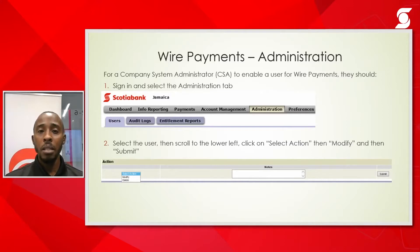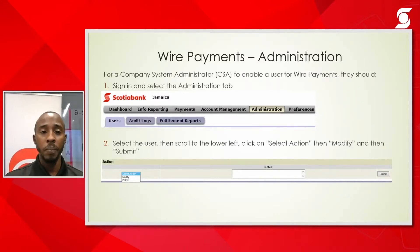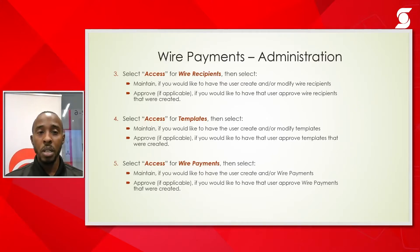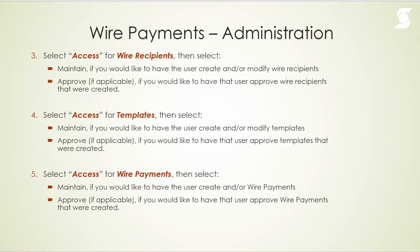When you sign in, go to Administration and click on the user you want to modify or view. Once you're on the user profile, go to the lower left of the screen, click on 'Select Action,' then 'Modify' and 'Submit.' On the user profile screen, select 'Wire Recipients' and choose 'Maintain' — this will give that user the ability to create a wire recipient.